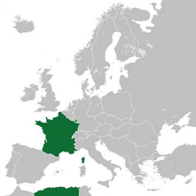The French Fourth Republic was the Republican government of France between 1946 and 1958, governed by the Fourth Republican Constitution. It was in many ways a revival of the Third Republic that was in place from 1870 during the Franco-Prussian War to 1940 during World War II, and suffered many of the same problems.